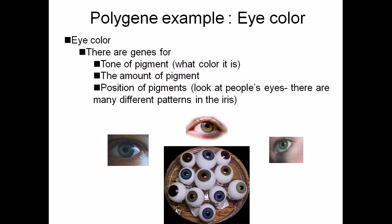Here we can see another example of polygenes: eye color. There are genes for three important things—the tone of the pigment (what color it is), the amount of the pigment, and the position of the pigment. In people's eyes, there are many different patterns in the iris.